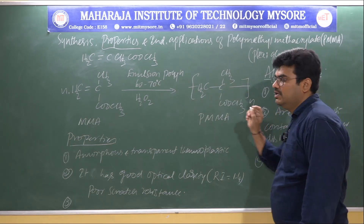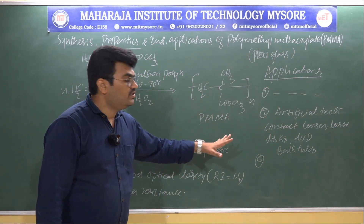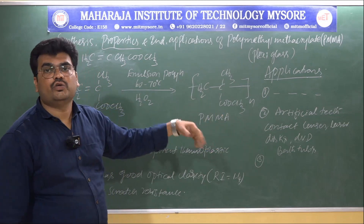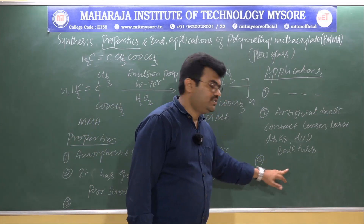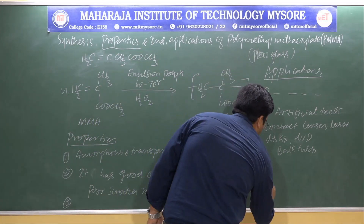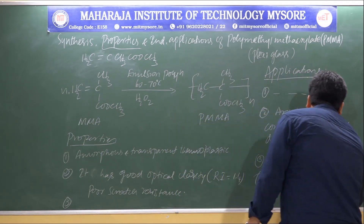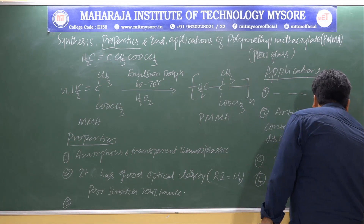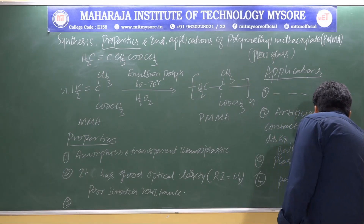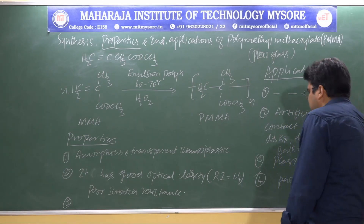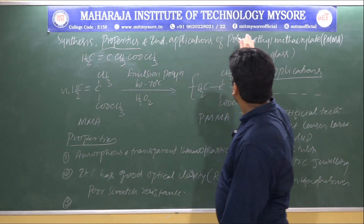PMMA can be used in the manufacturing of protective coatings and plastic jewelry due to its good optical clarity. It can also be used as paint and adhesives.